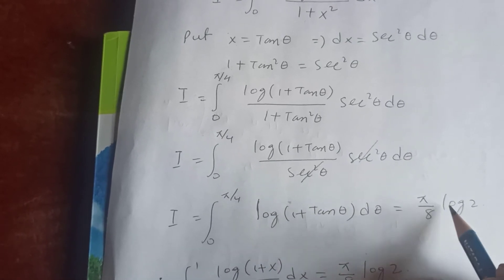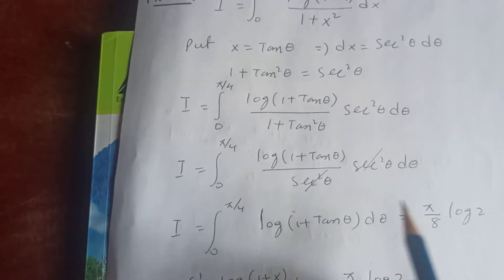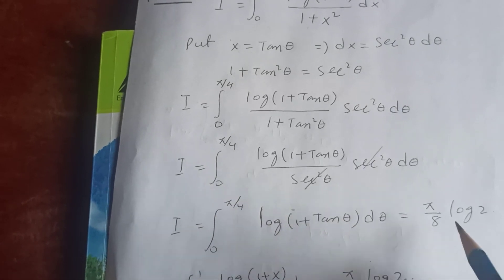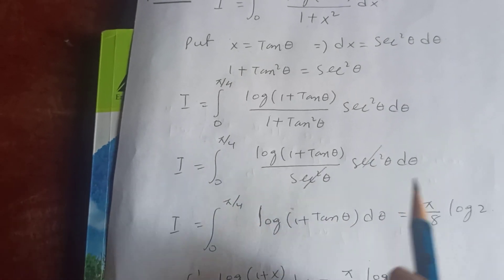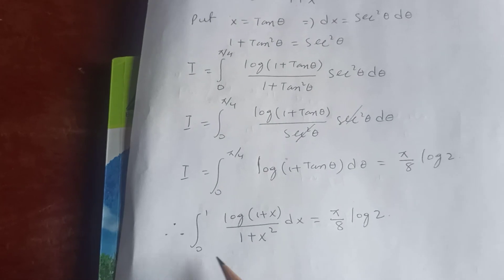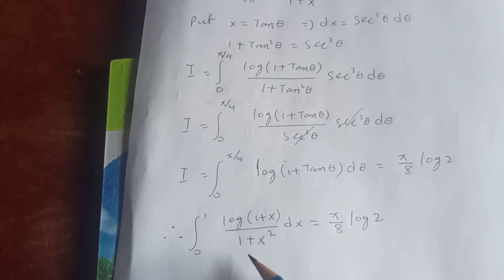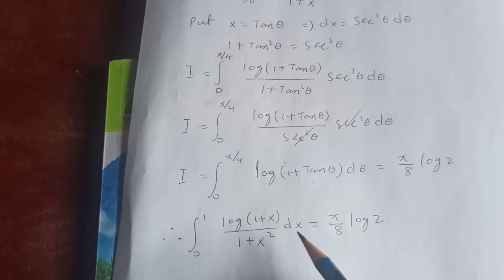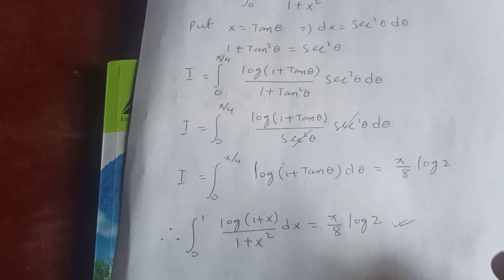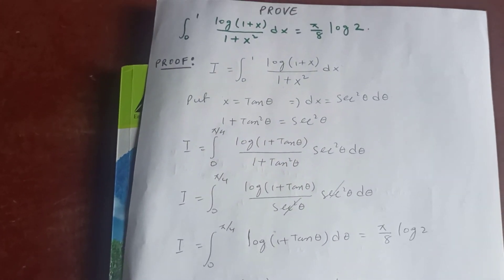This integral equals pi/8 · log2. Therefore our integral I, which is the integral from zero to one of log(1+x)/(1+x²) dx, equals pi/8 · log2. So this completes the proof.